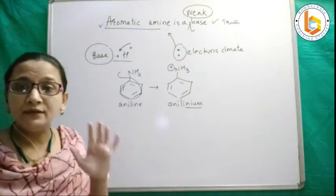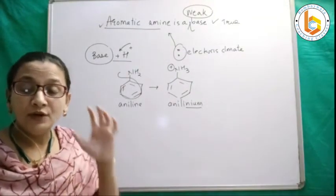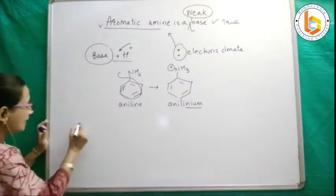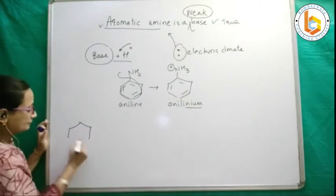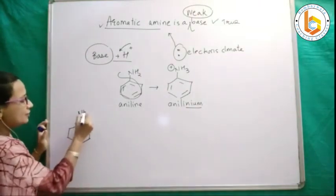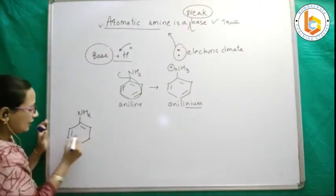This is aniline. You can see that the lone pair of electrons on nitrogen is in conjugation with the benzene ring, giving rise to resonating structures with a positive charge on nitrogen and negative charges delocalized onto the ring.